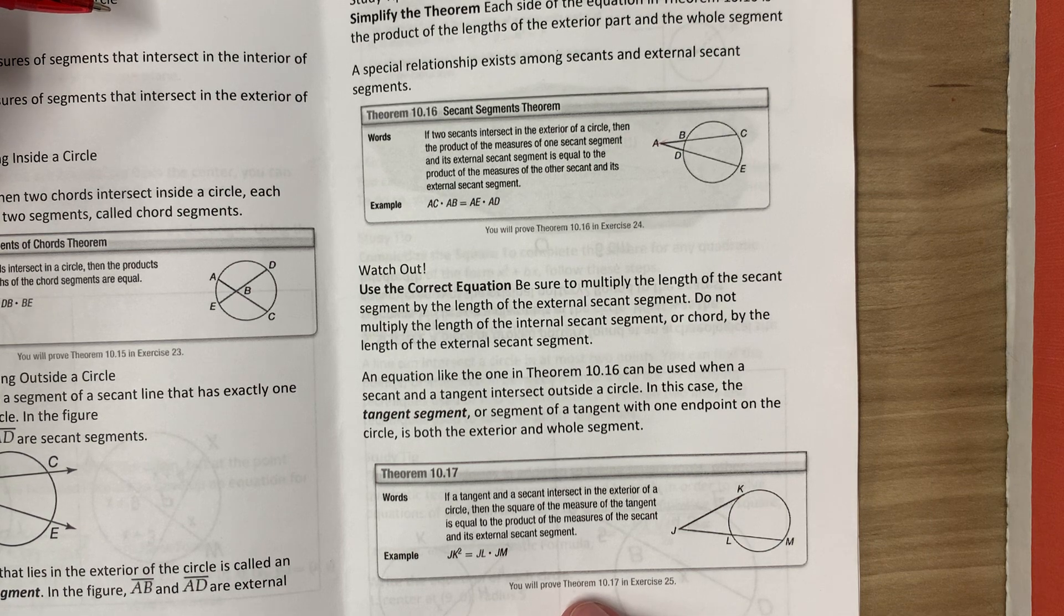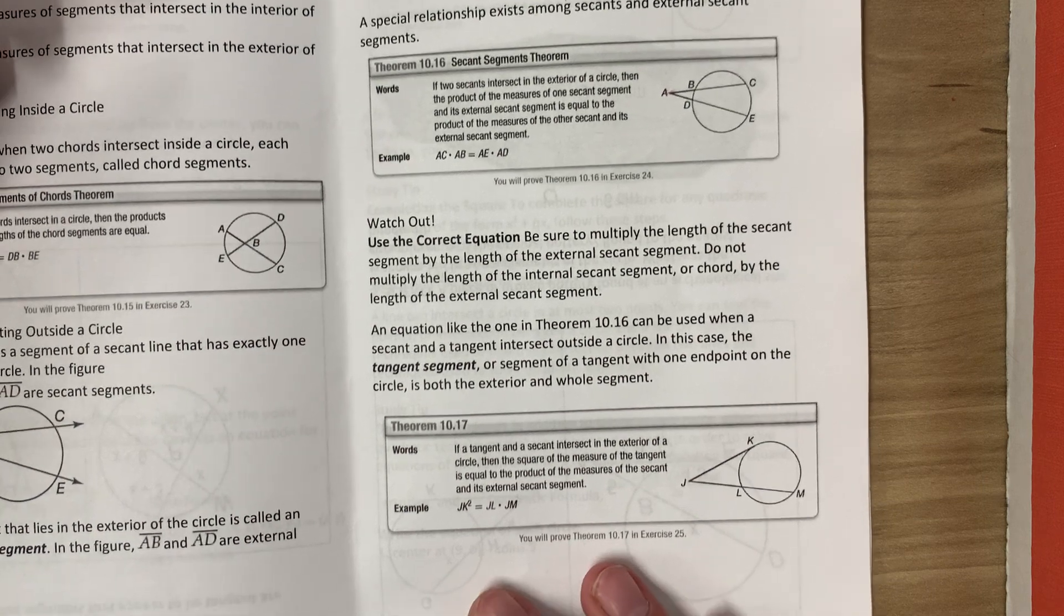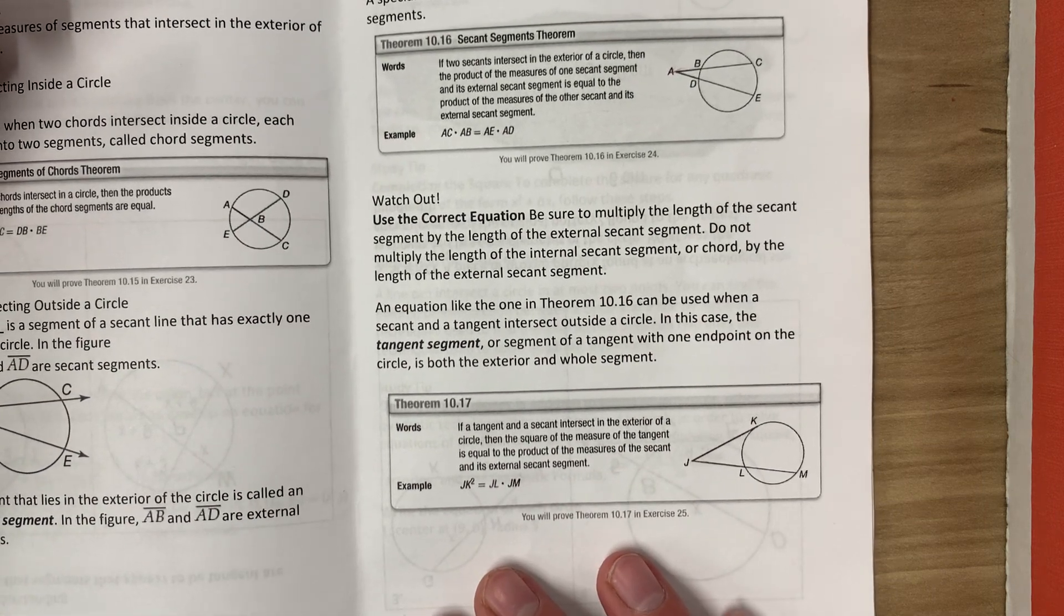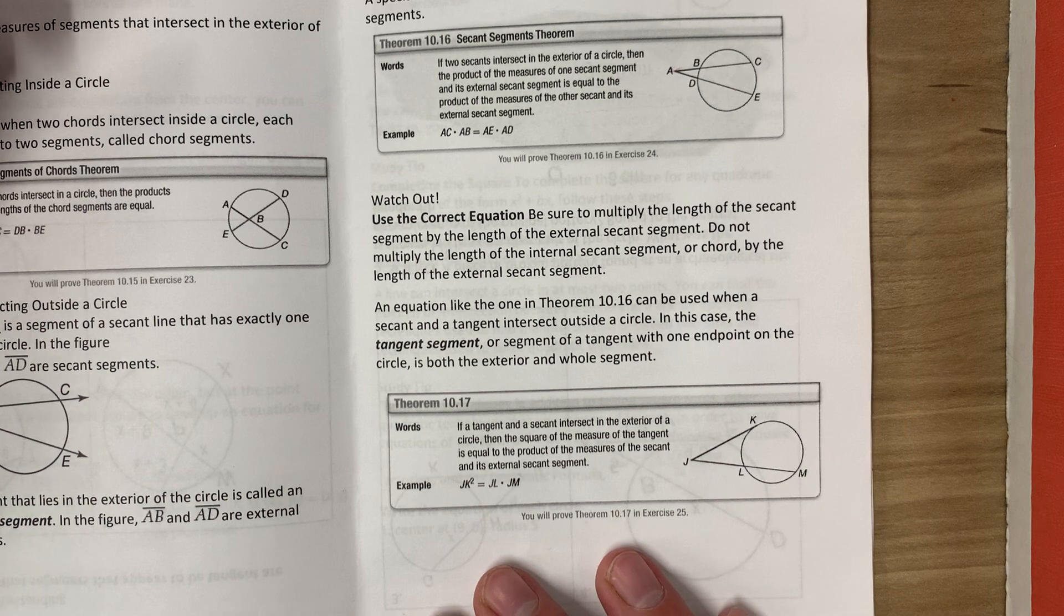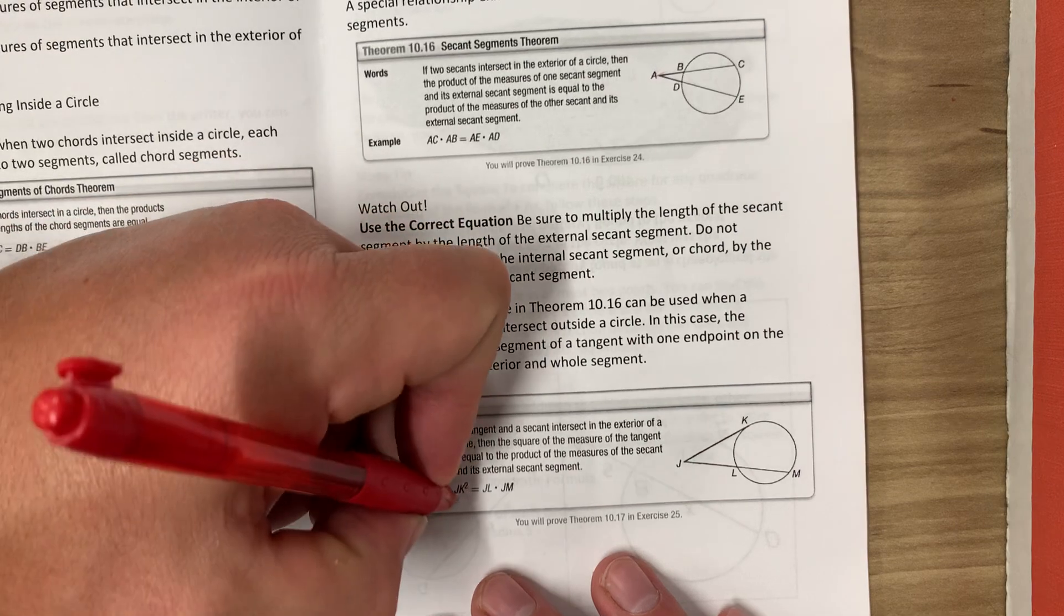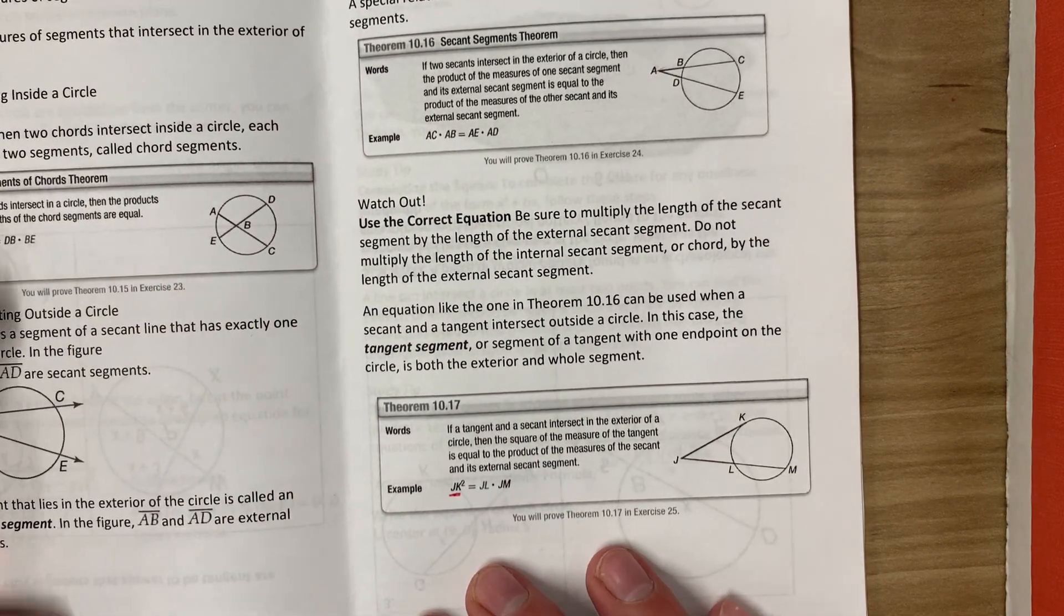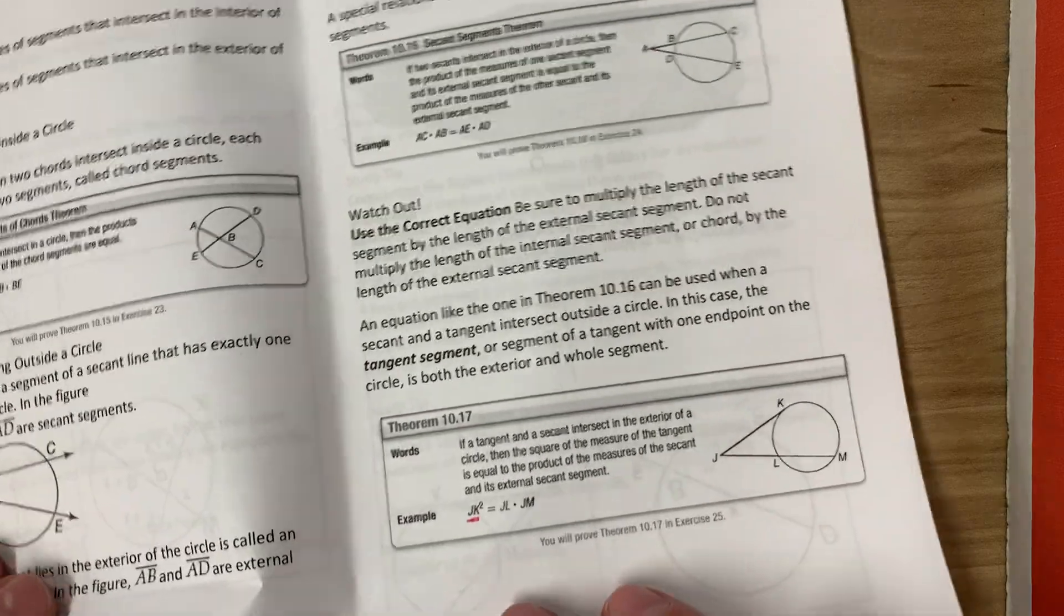So if a tangent and a secant intersect in the exterior of a circle, then the square of the measure of the tangent is equal to the product of the measure of the secant and its external secant segment. So our formula would be JK squared equals JL times JM.